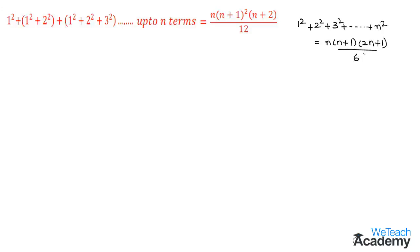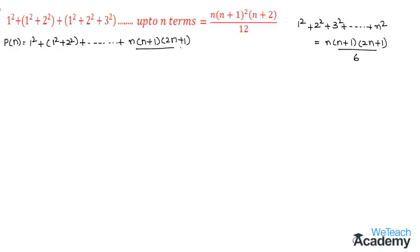This would be the nth term of the given series. Now let us consider the given series as P(n): 1² + (1² + 2²) + ... + n(n+1)(2n+1)/6 = n(n+1)²(n+2) divided by 12.